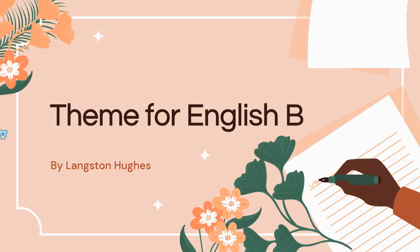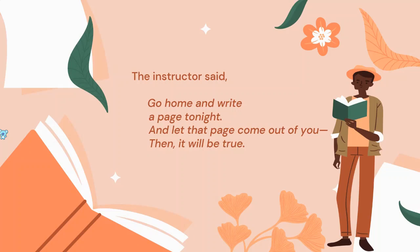In 'Theme for English B,' Langston Hughes is trying to show the same thing. The poem is about a 22-year-old college student. The professor had asked them to write an essay, and we see the student's reaction. The poem is not very specific about gender. The instructor said: 'Go home and write a page tonight, and let that page come out of you — then it will be true.' So heart speaks to heart, and other people will feel a connection when they read what you've written.